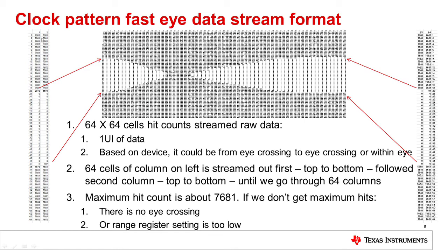Raw data begins at cell 1,1 with a value of 7,6,8,1 and continues until there is a drop to 29,72 at cell 1,20 — a delta of about 4,700. Then it drops back to 0. At cell 1,46 (row 46), we see a big jump to 7,6,7,4. Once column 1 on the far left is streamed out from top to bottom, the next column begins with cell 2,1 through cell 2,64. This continues until we go through all 64 by 64 cells.